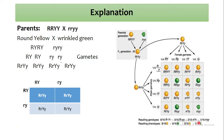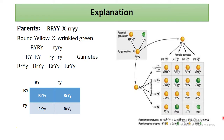یہ ہمارا Mendel کا Law of Independent Assortment ہے اور اس سے جو ratio آتی ہے وہ ہے 9:3:3:1۔ 9 والے homozygous یا heterozygous dominant characters رکھیں گے یعنی rounded yellow۔ 3 میں ایک dominant اور ایک recessive ہوگا جیسے round green، اور اگلے 3 میں wrinkled yellow — جس میں shape recessive اور color dominant ہے۔ آخری 1 میں دونوں characters recessive ہوں گے یعنی wrinkled green۔ I hope you understand, please give me your comments and subscribe my channel, thank you.